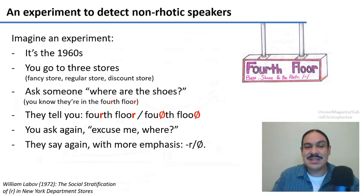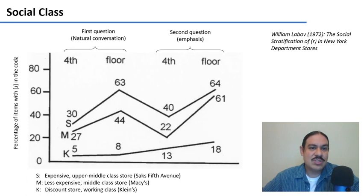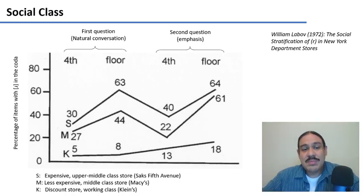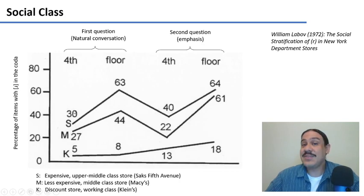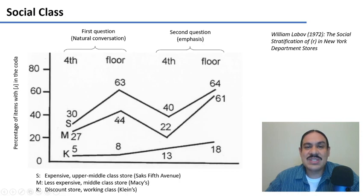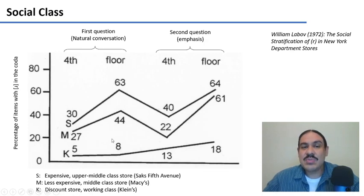These are the results of that experiment. The most important pattern is that the more expensive the store, the more you find R in 'fourth floor.' In Saks Fifth Avenue, the expensive store, an R appears 63% of the time. In Macy's, the less expensive store, people said it 44% of the time in natural conversation. And in Klein's, the discount store, people said it only 8% of the time.